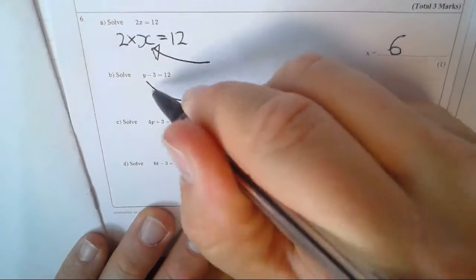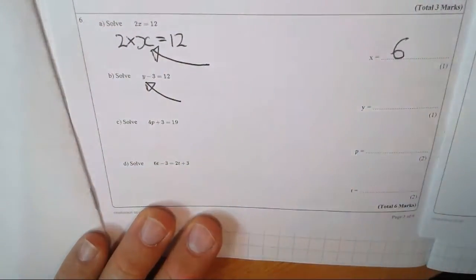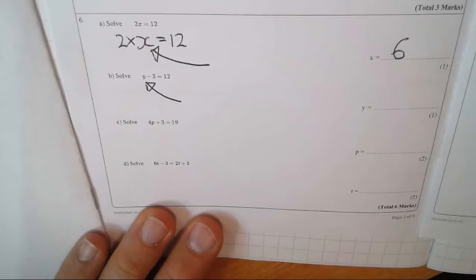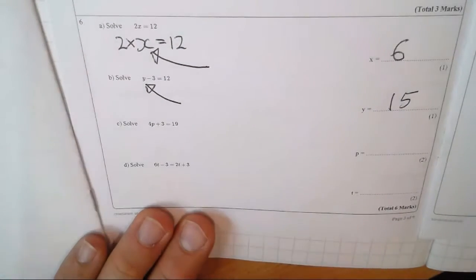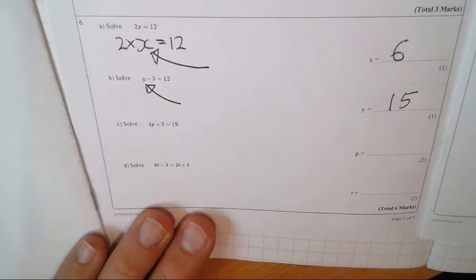Again, a number, if you're not sure about marking, come check it, I'll check it afterwards. Something take away 3 is 12. That must be 15, because 15 take away 3 would give you the 12.